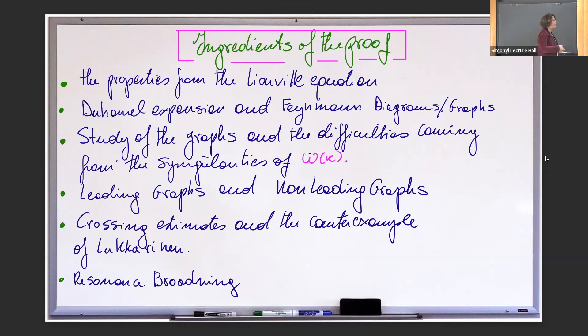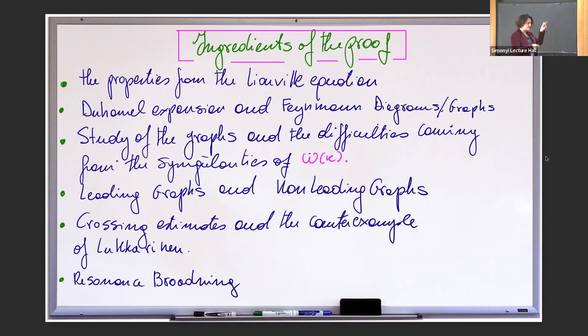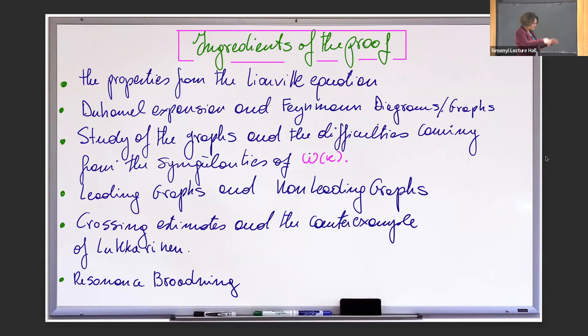Now what are the ingredients of the proof? First, the properties of the Liouville equation: the Liouville equation gives us some a priori bounds that control the dynamics of the equation in the right time interval — the kinetic interval. Second, the Duhamel expansion of Feynman diagrams and graphs. In the formal derivation I gave you only the two simplest graphs, but as you can imagine, if you have to estimate all orders of epsilon, it becomes very complicated. There are quite a lot of singularities coming from omega_K, and the noise is what makes it work.